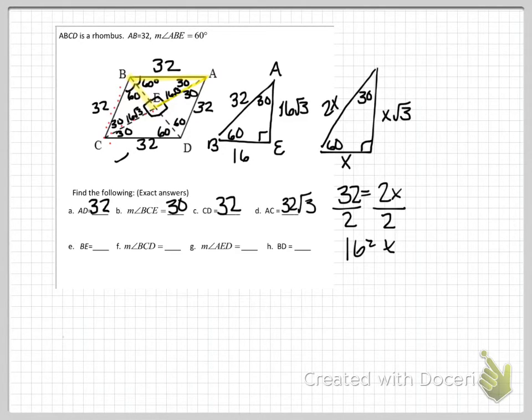BE is 16. BCD. That's the big angle there, so that's 30 plus 30, which makes it to be 60. AED will be 90. And BD will be 16 plus 16, which is 32. Now many of your rhombus examples or problems are going to be special triangles, and so you're going to need to simplify those square roots.